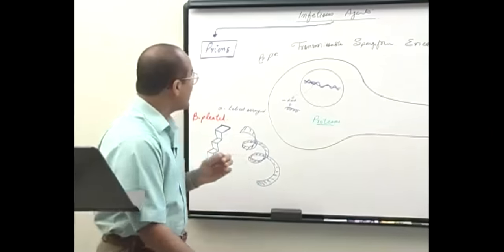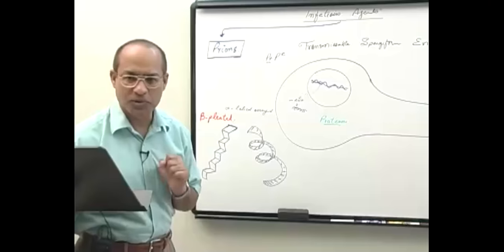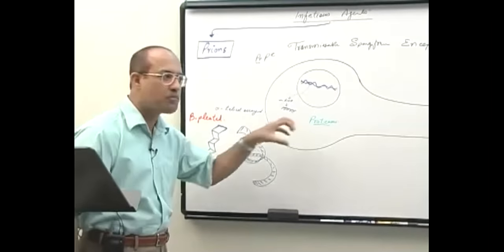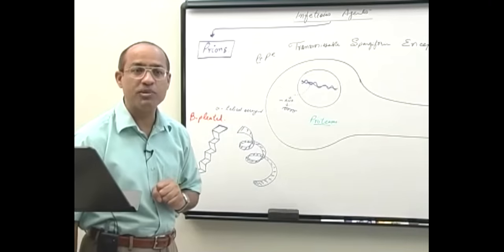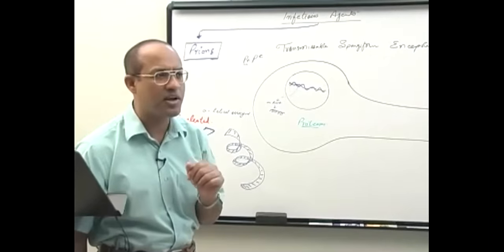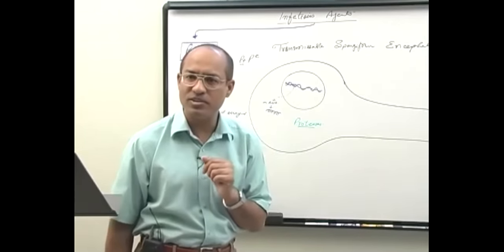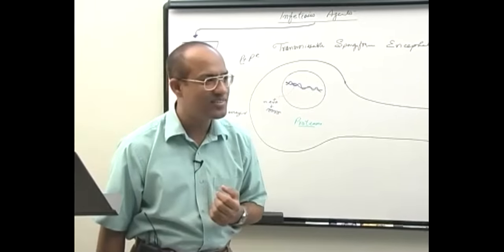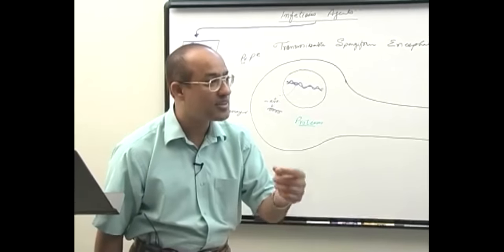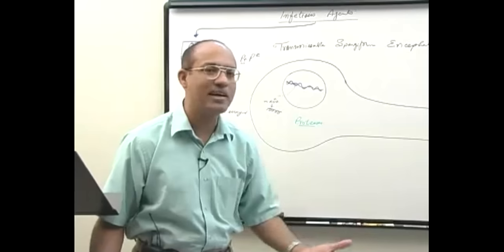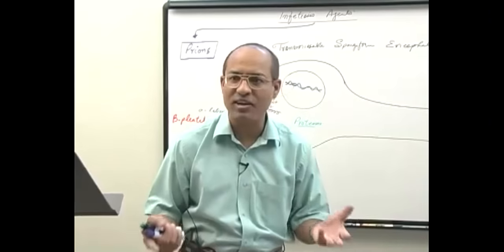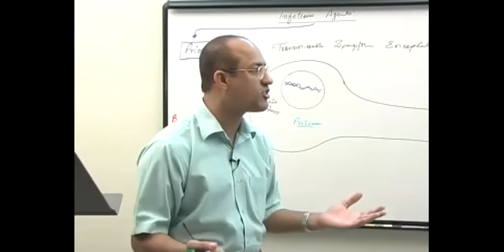Just as corruption in society is difficult to root out, prions are difficult to remove from cells because of beta-pleating. Other proteins are also beta-pleated — for example, amyloid. Amyloid is any protein in the body that is beta-pleated and present extracellularly. Once amyloid starts depositing in tissues you cannot digest it away because it is resistant to proteolytic activity.